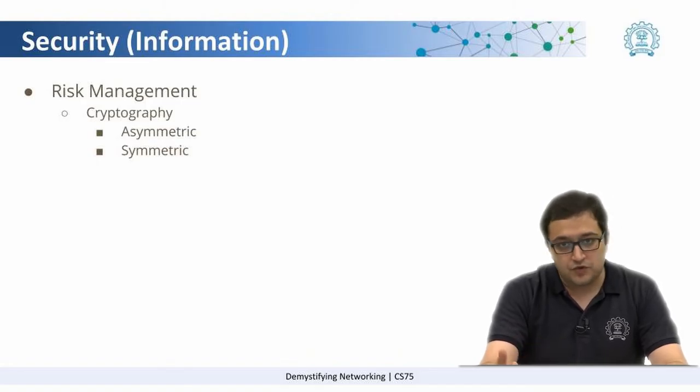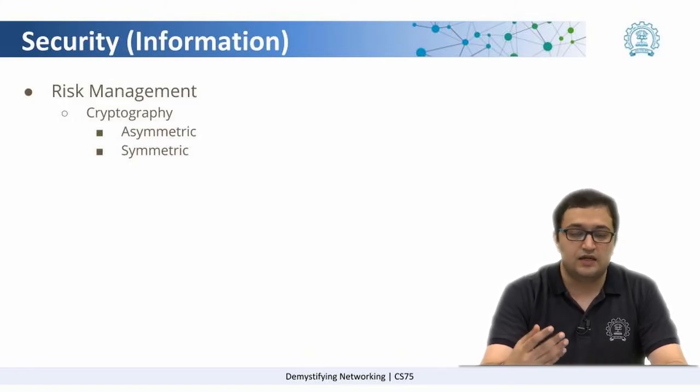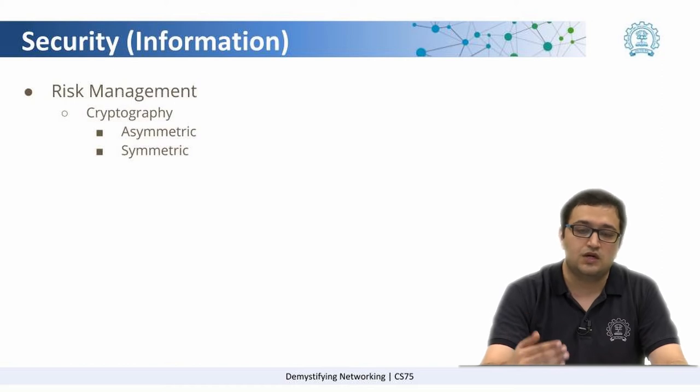There are two types of ways that we can encrypt data: symmetric and asymmetric. In symmetric, we have one standard key which is used to encrypt and decrypt the data. In asymmetric, we use a set of keys where one of them is used to encrypt, the other is used to decrypt.